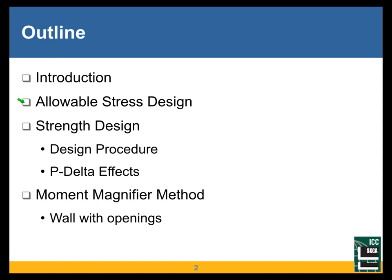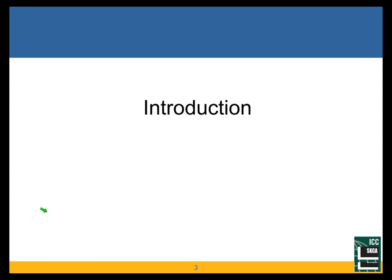The first part before the break, we will talk about allowable stress design. That seems to be still the most common design method, and for out-of-plane loading, it's a little simpler and gives about the same results as strength design. After the break, we will look at strength design, where we do have to cover second-order P-delta effects. The third segment will be on the moment magnifier method, which is useful for walls with openings. So the first part here, we'll have a few minutes of an introduction, and then we'll talk about allowable stress design.